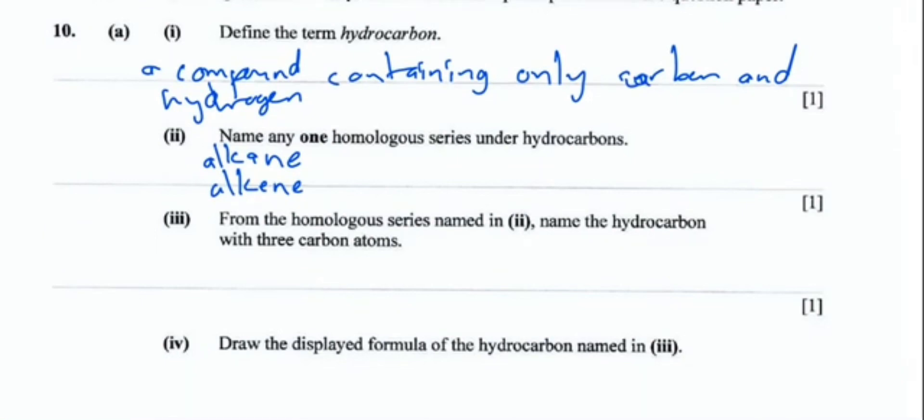From the homologous series named, name the hydrocarbon with three carbon atoms. If it is an alkane, then its general formula is CnH2n+2, which means if it is C3 it will be C3H6+2, which means it will be C3H8. This one is called propane. The important thing to note about hydrocarbons is their names are almost similar. If it's an alkene instead, it will be C3H6 because its general formula is CnH2n. Instead of propane, it will be called propene.